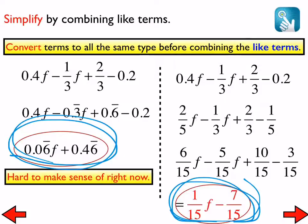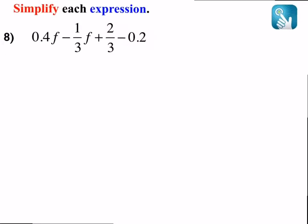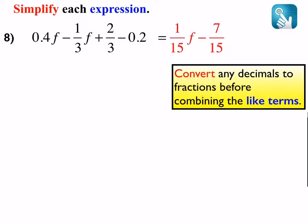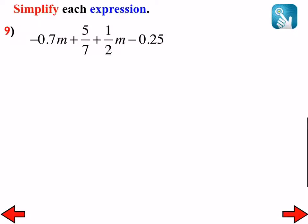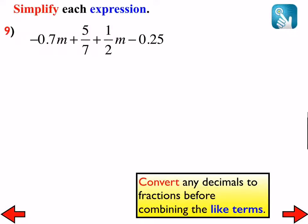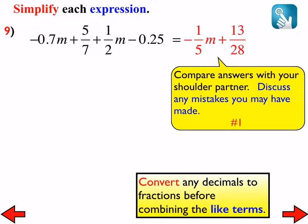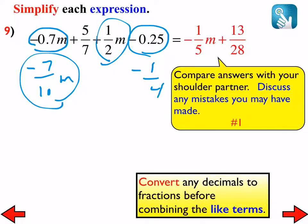I would like everybody to do number 9. What did you get? Negative 1/5 and plus 13 over 28. Very good. That is correct. And where that comes from is I'm just going to get this one started. That's negative 7/10M, and this is negative 1 fourth. And then from there, combine your like terms right there and combine your like terms right here, which are the constants, and that's what we should end up with. Any questions with number 9?